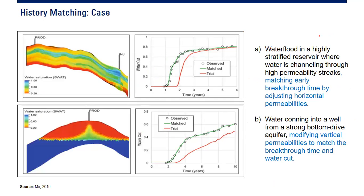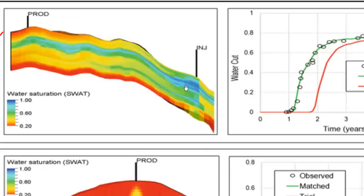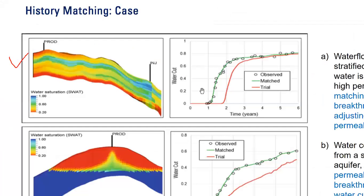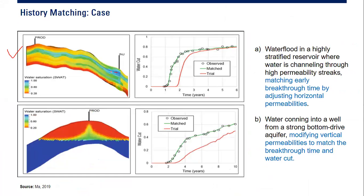For example, Case 1 is a case of water flood in a highly stratified reservoir where water is channeling through high permeability streaks. The blue zone represents the high permeability streak — water from the injector goes directly to the producer through this streak, so water can move very fast through this channel. This will be dangerous — water moves too fast.